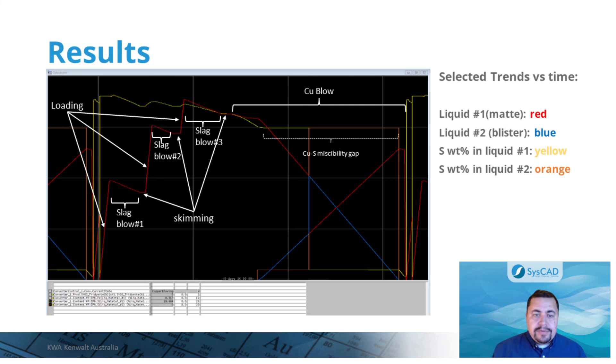As an additional reference, this figure shows a snapshot of an entire cycle indicating the various stages during the converting. The amount of matte is shown in red, blister copper in blue, and the corresponding sulfur concentrations are shown in yellow and orange for the matte and blister phases, respectively.